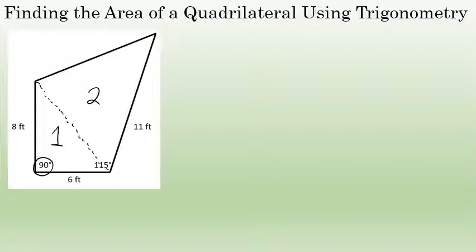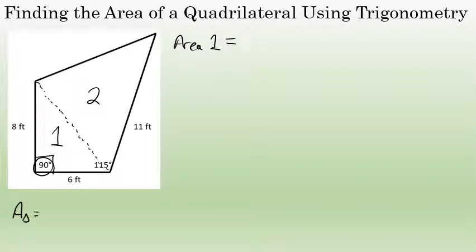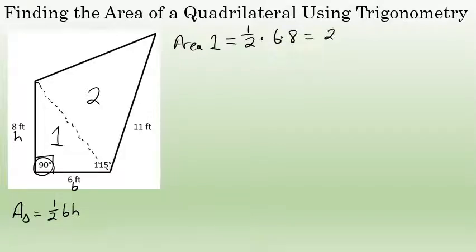Triangle 1 is a lot easier to work with for a couple of reasons. Triangle 1 is a right triangle, and there's more information given about it than triangle 2. The area of triangle 1 is very straightforward — I can use the formula one-half base times height, because the base is 6 and the height is 8. That means the area of triangle 1 is one-half times 6 times 8, which is exactly 24 square feet.